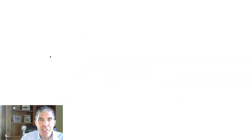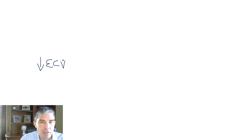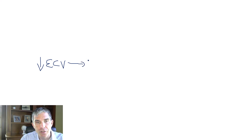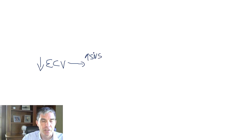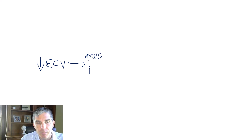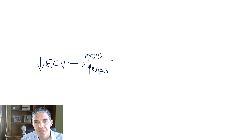Now that we understand the three classic disease states that cause low ECV, let's talk about how the body responds anytime the ECV is low. This response occurs in volume depletion, heart failure, and cirrhosis. When the ECV is low, you get increased activity of the sympathetic nervous system. Baroreceptors will sense the low ECV, the low blood pressure, and the under-perfusion of the arterial tree, and that will activate the sympathetic nervous system. Also, when the ECV is low and the kidneys are under-perfused, they release renin, so you get increased activity of the renin-angiotensin-aldosterone system.